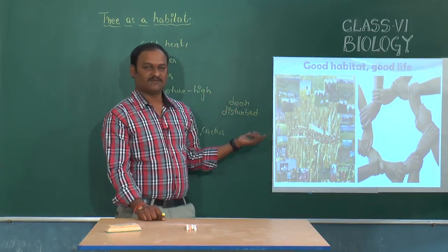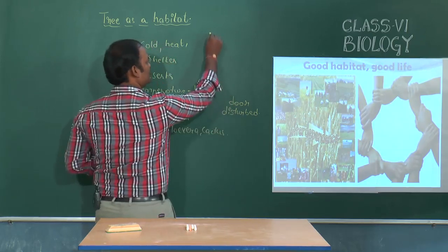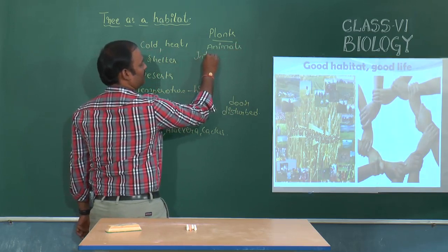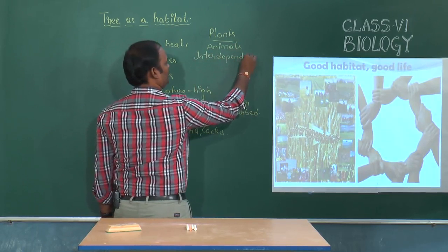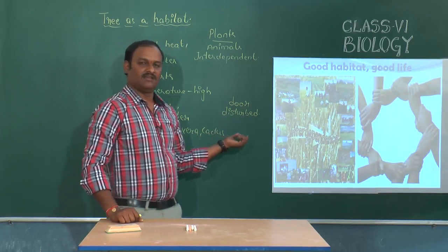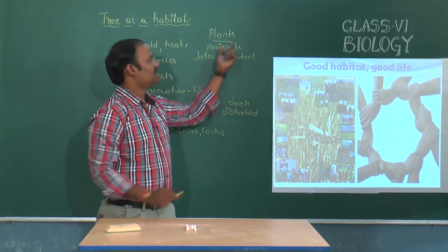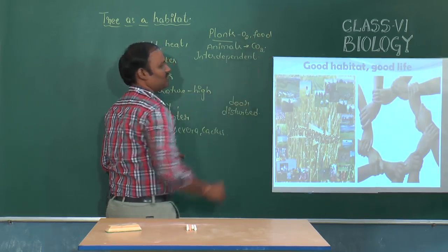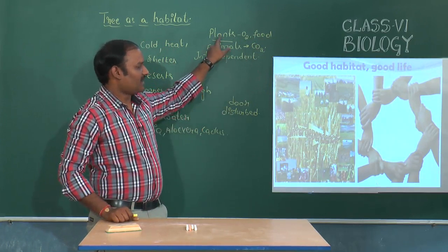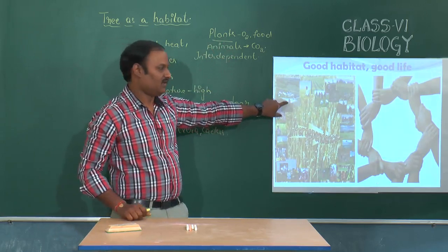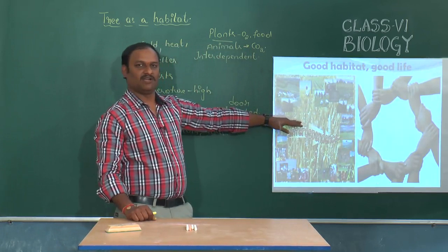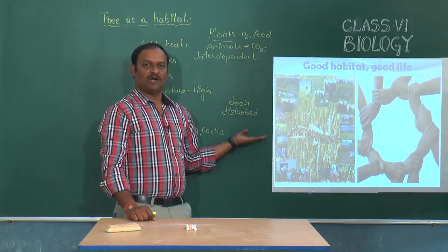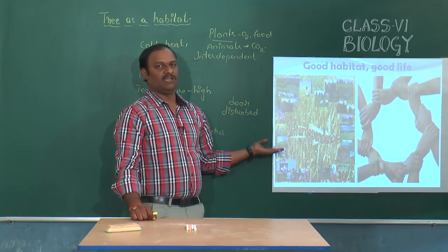It is our minimum responsibility to recognize that all plants and animals living in this environment are interdependent on each other. We depend on plants for oxygen and food, and plants also depend on animals. Let us join hands to develop this interdependence and minimize the destruction of aquatic and terrestrial habitats by avoiding dumping of waste and avoiding deforestation.